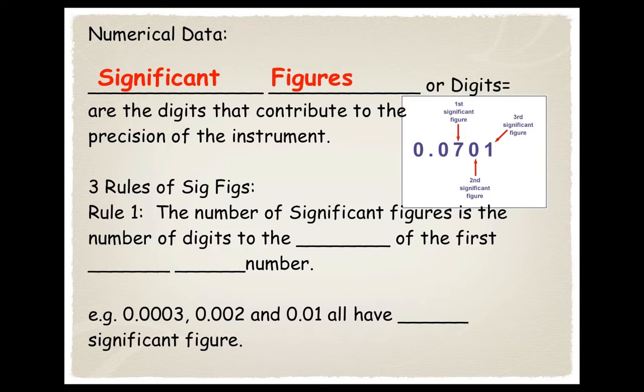There's three rules. Rule number one: The number of significant figures is the number of digits to the right of the first non-zero number. So if we look at this example, how many significant figures do all of these have? Hopefully you got the same answer - one. In case you can't count those zeros.